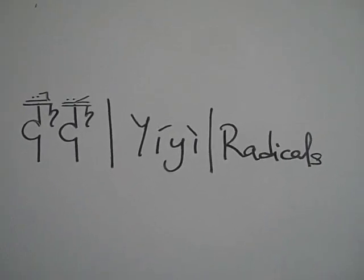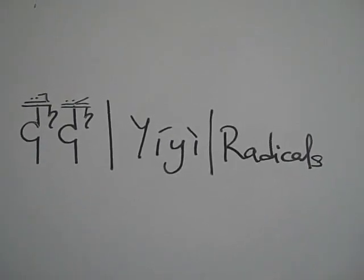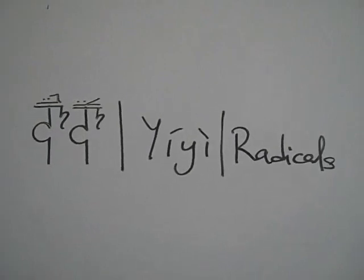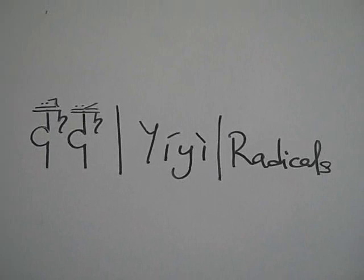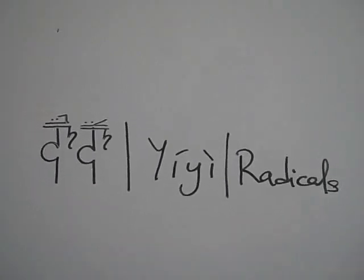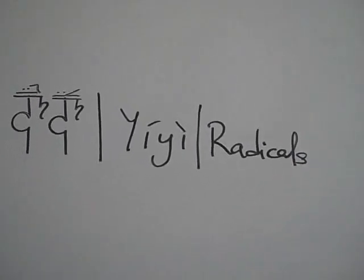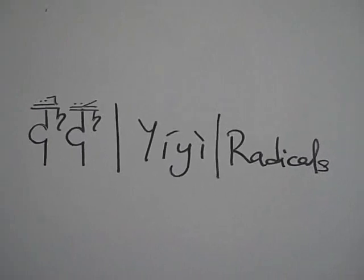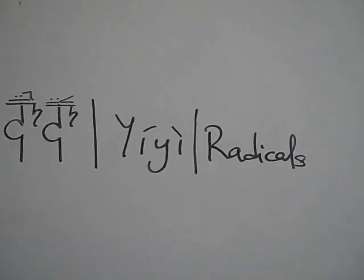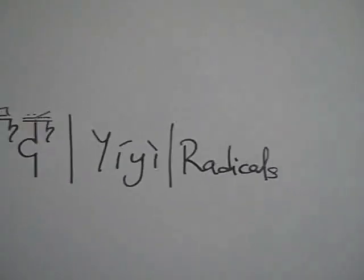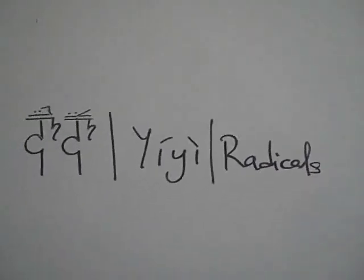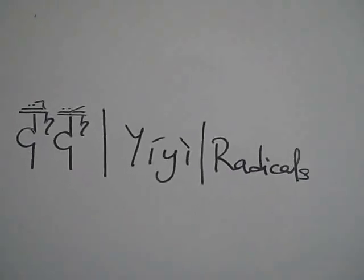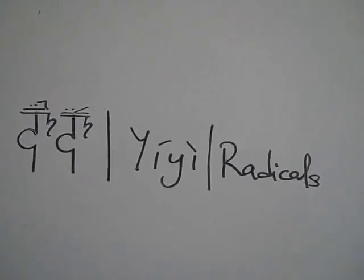The second step is to learn how to write the radicals. Each consonant is broken into two parts. The first part is the root, which we just discussed. And the second part, which appears to the top right of each consonant, is the radical. The radical is so-called because by changing the radical in each root, you derive a different consonant. You derive each new consonant.